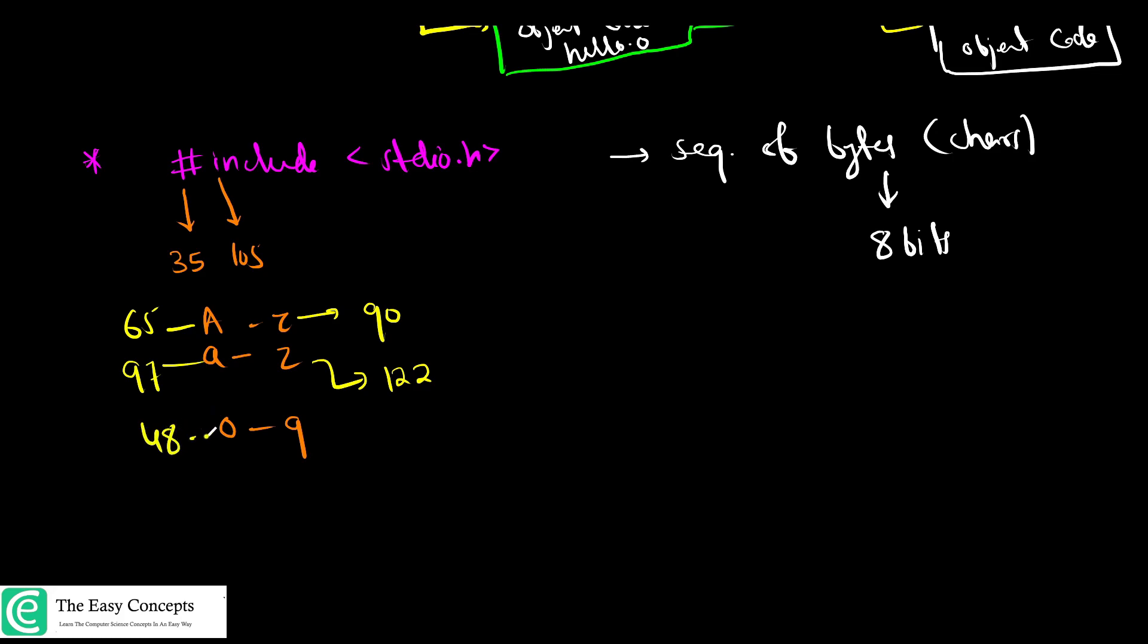Similarly, if you talk about special characters, all these have some ASCII values. The hash has 35. In this program we have a space here, right? This space also has value 32. This angular bracket has a value of 60, dot has value of 46, h has value of 104. And after #include <stdio.h> we have a newline. The newline character has a value of 10.